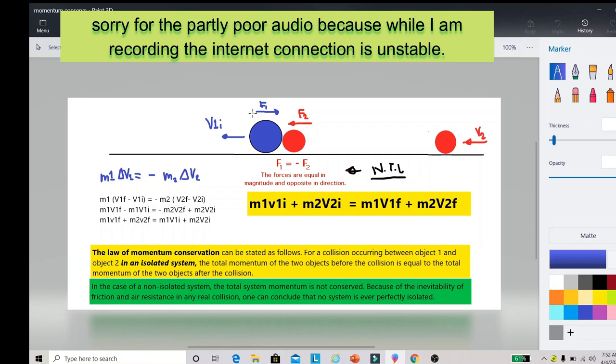Ngayon kapag i-review natin yung impulse momentum, ang sabi yung impulse daw is equal to the change in momentum. Yung change in momentum is equal to the mass times the change in velocity. In equation form, if you try to look at this blue writing here, m1 delta v1 is equal to negative m2 multiplied by delta v2, and we are going to expand and simplify it further. m1 multiplied by the quantity v1 final minus v1 initial, similarly on the right side of the equation we have negative m2 multiplied by v2 final minus v2 initial.